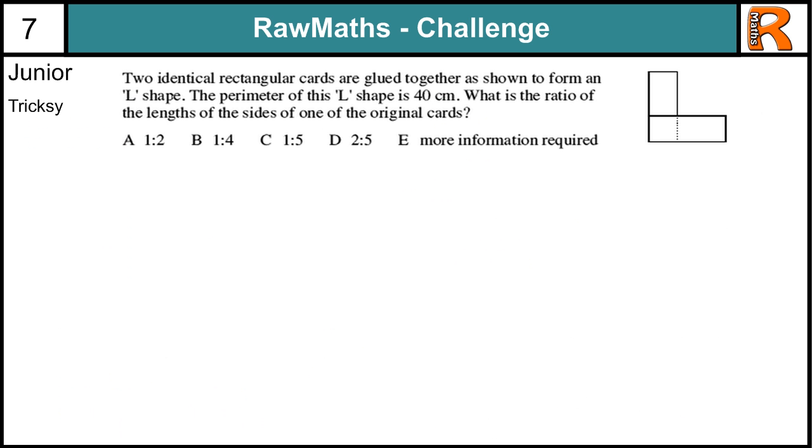Doing your tricksy from Raw Maths Challenge number 6. This was from last week's video. If you haven't had a go at this yet, you might want to pause the video now and have a go. So, the solution to this. If we've got two identical rectangles that have been glued together to make an L shape, and we know the perimeter, the distance around the outside is 40 centimeters.